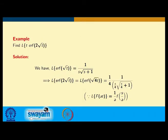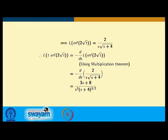Now let us find the Laplace transform of erf(2√t). Since 2√t = √(4t), and using the scaling property L{f(at)} = (1/a)·F(s/a), we get L{erf(2√t)} = (1/4) · F(s/4) where F(s) = 1/[s·√(s+1)]. This gives L{erf(2√t)} = 2 / [s · √(s+4)].